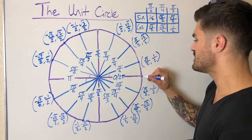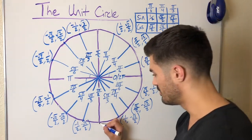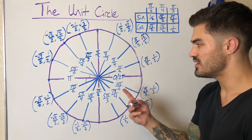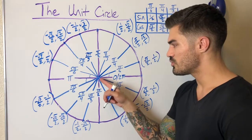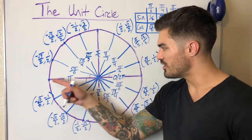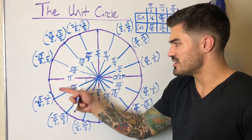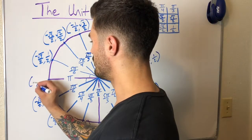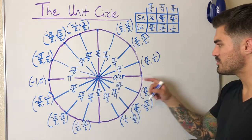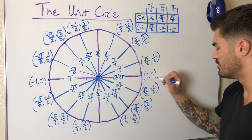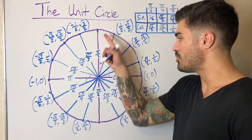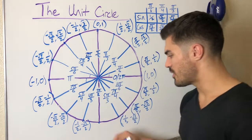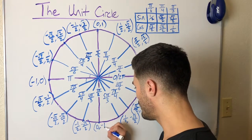We're actually missing the easiest part — the axis points. We don't even need trigonometry for these. The circle has radius one, so on the x-axis we move one unit: (1, 0) on the right, (-1, 0) on the left. Moving one unit up gives (0, 1), and one unit down gives (0, -1).